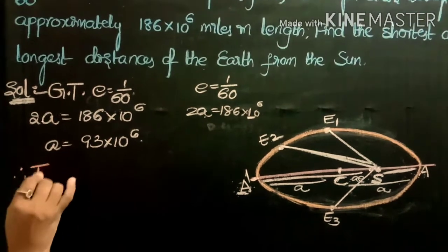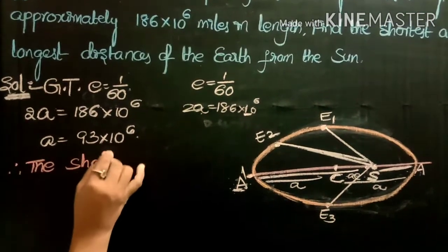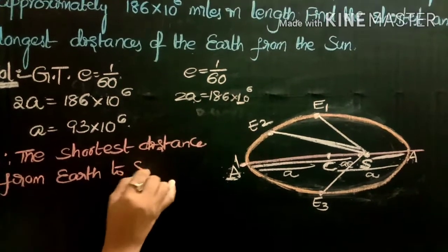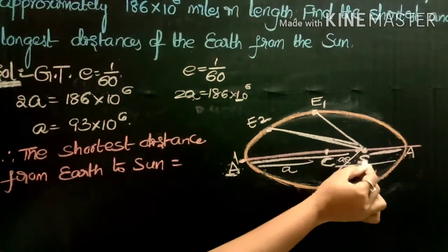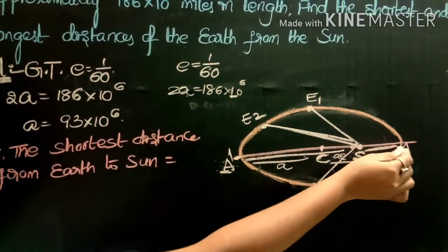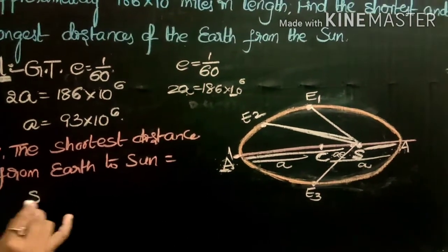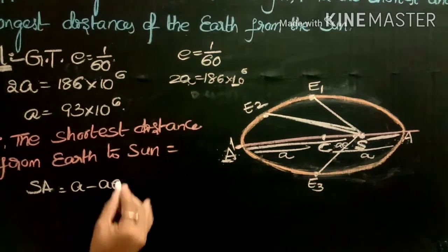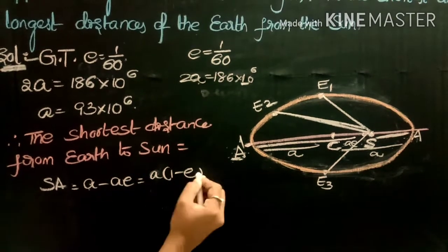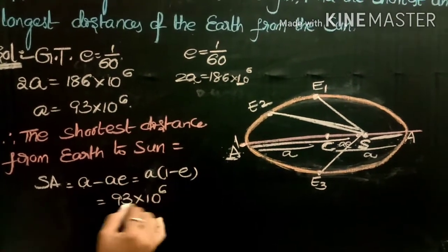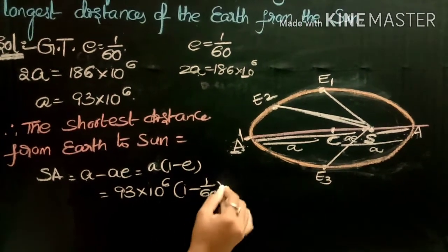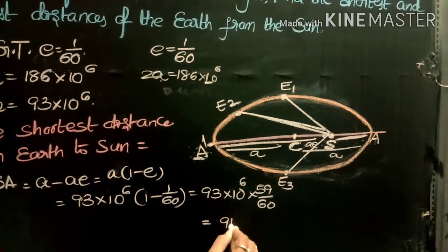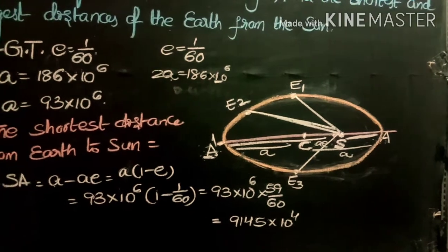The shortest distance from earth to sun is SA. When the earth is at position A, it is the nearest point from the sun. SA = CA - CS = a - ae = a(1 - e) = 93×10⁶ × (1 - 1/60) = 93×10⁶ × (59/60). After simplification, the shortest distance = 9145×10⁴.